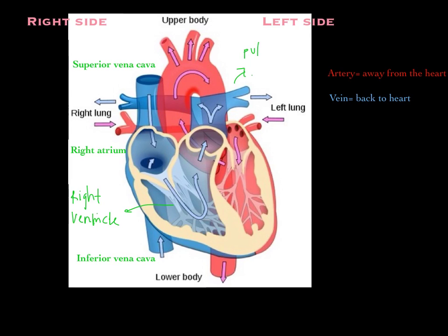Once the blood reaches the lungs and gas exchange occurs, the reoxygenated blood comes back from the lungs into the heart through the pulmonary vein. Vein means back to the heart, and pulmonary refers to lungs — so the pulmonary veins bring blood from the lungs back into the heart.